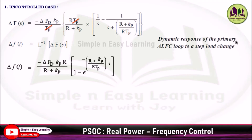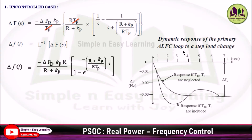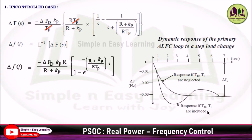The dynamic response of the primary ALFC loop to a step load change can be represented with T on the x-axis and del F on the negative axis. When Tg and Tt are neglected, the response is a smooth curve. If Tg and Tt are considered, there will be a small oscillation in the variation of del F(s).